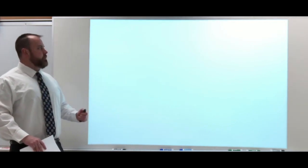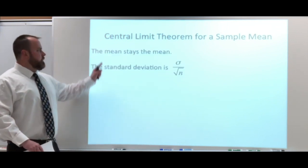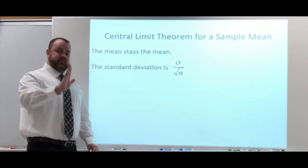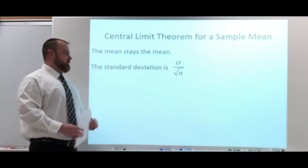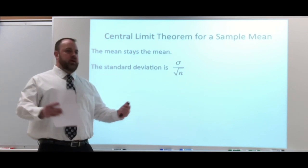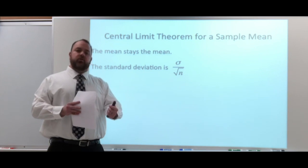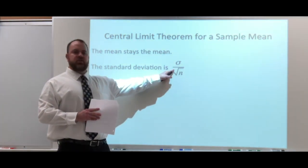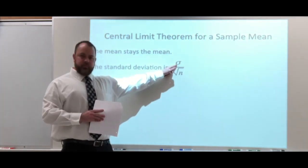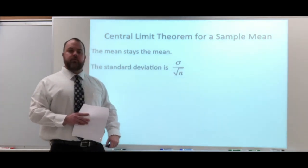When you are taking a sample, there's a chance you could use the central limit theorem. The central limit theorem for a sample mean says two things: first, our mean stays the same — that 87 seconds for our average stays the same as our center point. Second, the standard deviation does change because we're not looking at just a single individual, we're looking at a sample. The standard deviation is sigma divided by the square root of n — the population standard deviation divided by the square root of n, our sample size.